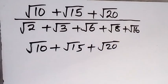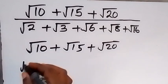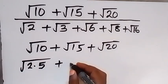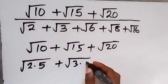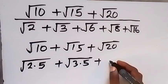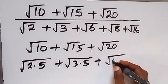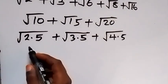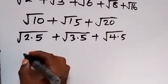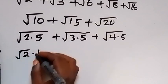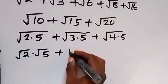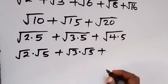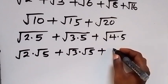When we simplify this, root 10 can be written as root 2 times 5, then root 15 can be split as root 3 times 5, and root 20 can be written as root 4 times 5. Since we have numbers inside the root multiplying, we can separate them: this gives root 2 multiplied by root 5, plus root 3 multiplied by root 5.